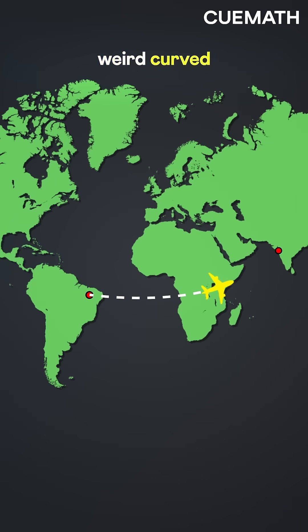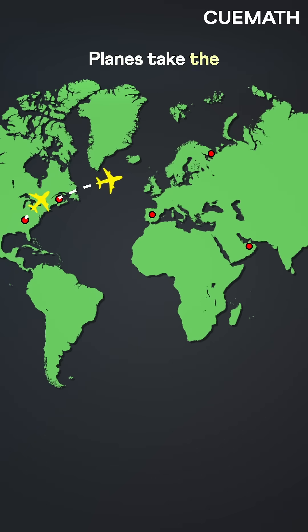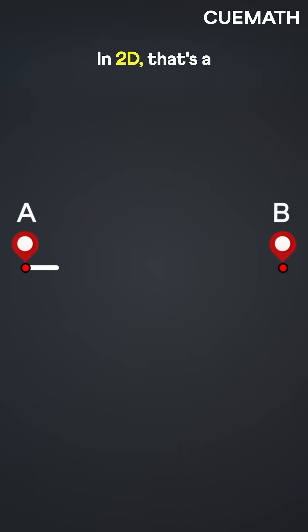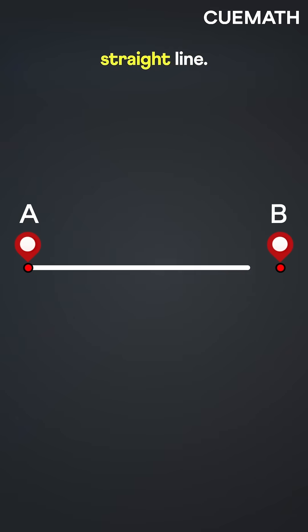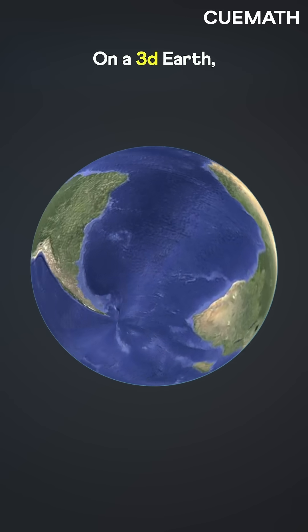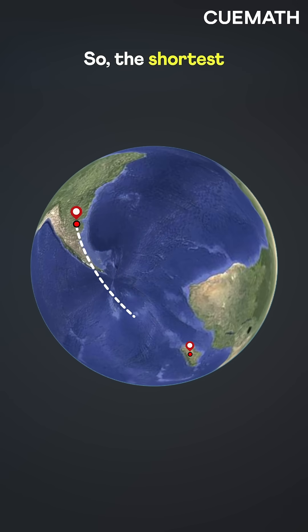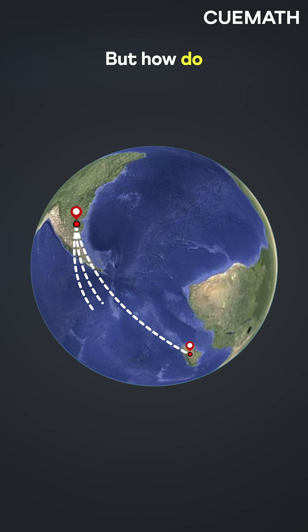Planes follow these weird curved paths, but why? Planes take the shortest path between two places. In 2D, that's a straight line. On a 3D Earth, a straight line isn't possible, so the shortest path must be an arc.